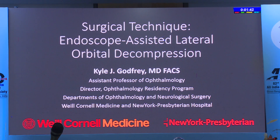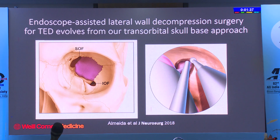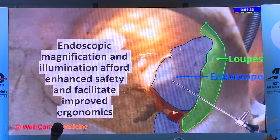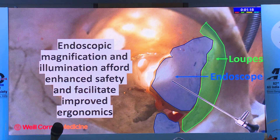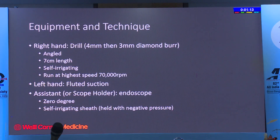These endoscope-assisted techniques from working with neurosurgeons can actually be translated to lateral wall decompression for thyroid eye disease. The anterior green section I still do with loops—it's awkward to use the endoscope—but for the deeper bone and areas of thin bone overlying the dura, the endoscope gives you magnification, illumination, and deep depth of focus to do this aggressively and safely.